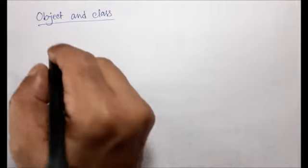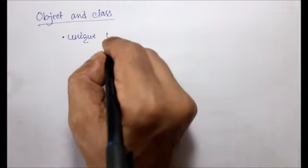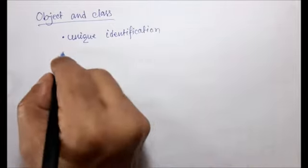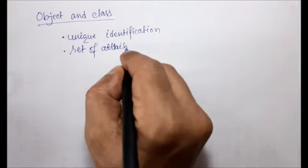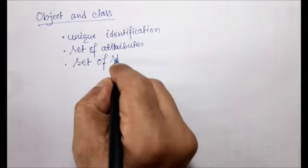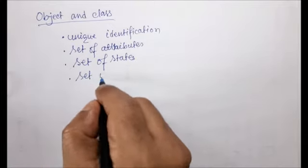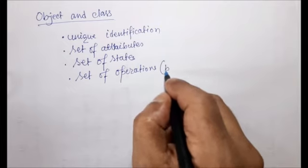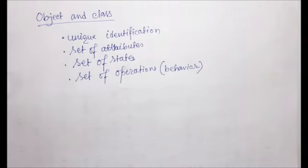An object has the following main characteristics: a unique identification, a set of attributes, a set of states, and a set of operations — that is, behavior. These characteristics of an object are very important.